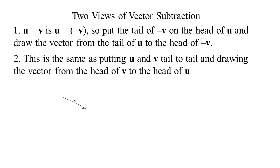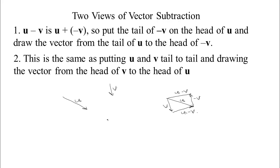To summarize: we know how to scale vectors, add vectors, and subtract vectors two ways — u minus v is u plus the opposite of v, which is equivalent to putting them tail to tail and drawing the vector from the head of the subtracted vector to the head of the other. All of this has been geometric, done with a straightedge and compass. In the next video we'll look at how to do this with symbols and numbers.